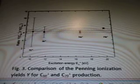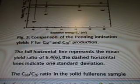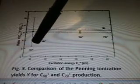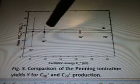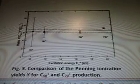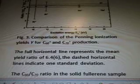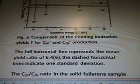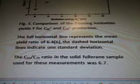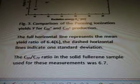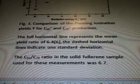Radio's up on the left, and down on the bottom there's excitation energy. Okay, so some sort of figure with letters and numbers. It's KR, AR star, or K, whatever, the K1 star, AR star, NA star, and HA star. Okay, showing something. Comparison of the pending ionization yields Y for C60 plus and C70 plus production. The full horizontal line represents the mean yield ratio of 6.4 to 6. The dashed horizontal lines indicate one standard deviation.